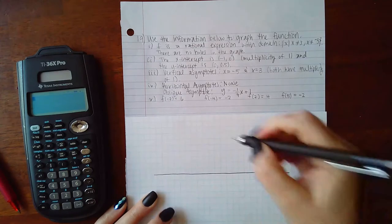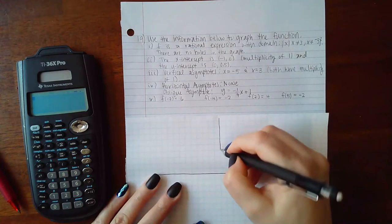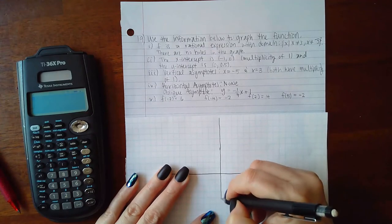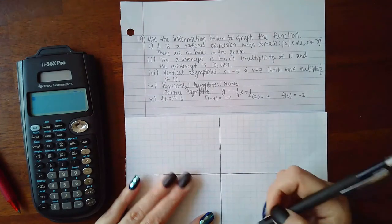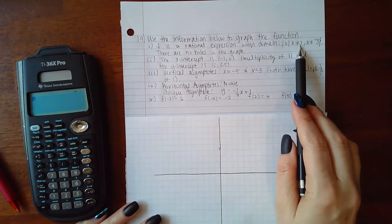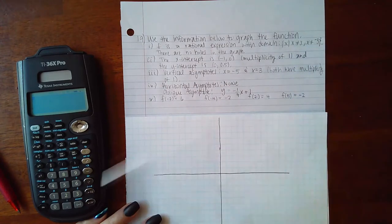One of those pieces of information is that f is a rational expression, which means it will most likely have asymptotes. And the domain of this expression is x cannot equal 3 and x cannot equal negative 5.